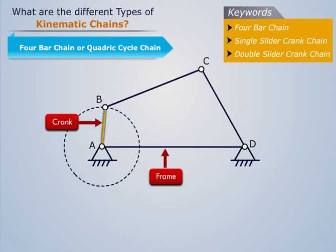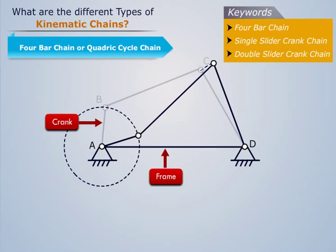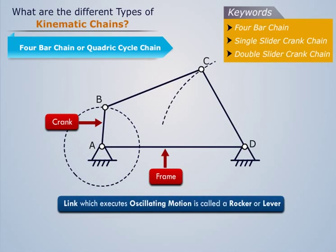Due to the revolution of link AB, link CD oscillates. Such a link which executes oscillating motion is called a rocker or lever.